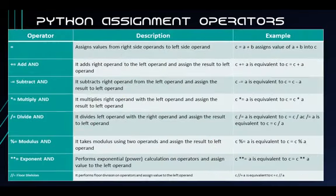Next are the assignment operators, which include 9 operators. The first is the equal operator, which assigns the value from the right-side operand to the left-side operand. The add AND operator adds the right operand to the left operand and assigns the result to the left operand.